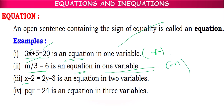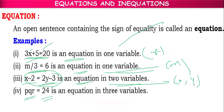Whereas x minus 2 equal to 2 by minus 3 is an equation in two variables, because in this equation we have variable x and we have variable y. pqr equal to 24 is an equation in three variables, because in this we have three unknown values.